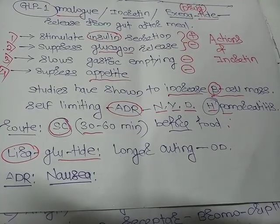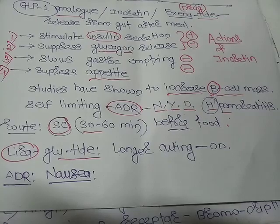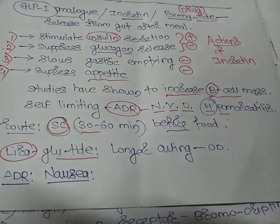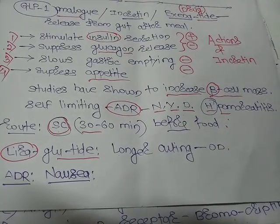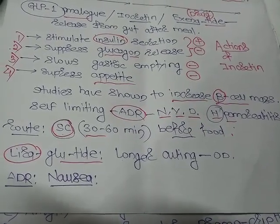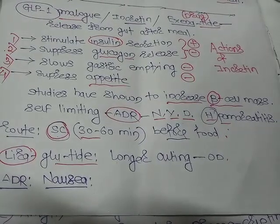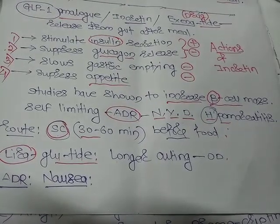Exenatide has some self-limiting adverse reactions like nausea, vomiting, diarrhea, and hemorrhagic pancreatitis in a few patients.